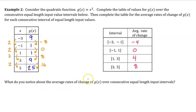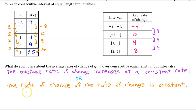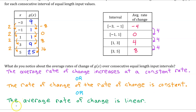What do you notice about the average rates of change of g of x over consecutive equal-length input-value intervals? Well, the average rates of change are not constant, but we do see a pattern. The average rate of change increases by 4 each time. One way to say it is that the average rate of change increases at a constant rate, or we could say the rate of change of the rate of change is constant. One more way to say it is that the average rate of change is linear.